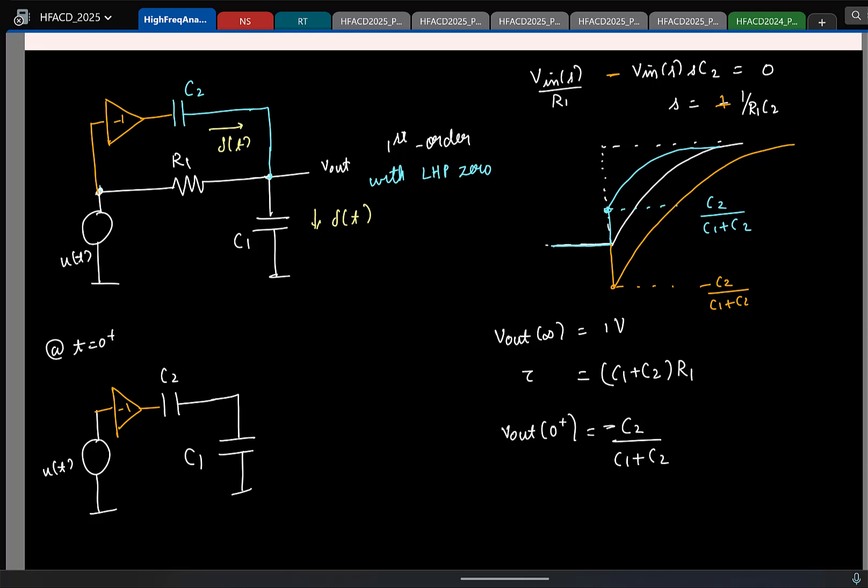So now we have some understanding of what happens with poles and zeros. Let us move on to our actual point of discussion. We came to all of this because we wanted to have a multi-stage OTA to drive resistive load and we wanted to see if the multi-stage structures are generally stable or not. We have some understanding. Let us now get back to making OTAs.